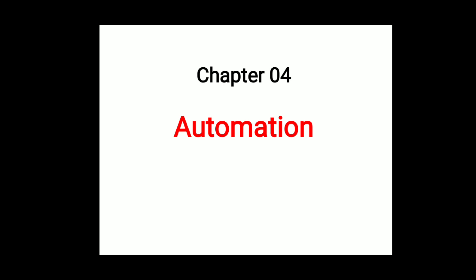Starting the chapter: automation is generally defined as the process of making machines follow a predefined sequence of operations with little or no human labor, using specialized equipment and devices that perform and control the manufacturing process.